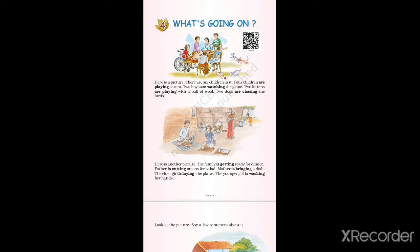Now see what's going on in the first picture. There are six children, and four children are playing carrom. Do you see that? Two boys are standing there watching the game. And do you see those small kittens playing with a ball of wool? Two dogs are chasing the birds — see the two dogs in the corner, they are chasing the birds.